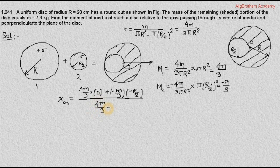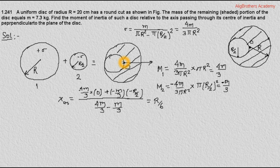The x-coordinate of the center of mass works out to R/6. So the center of mass of the given system is at a distance R/6 from point O along the x-axis. We call this point C.